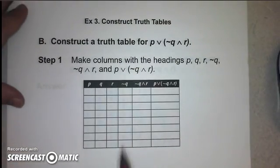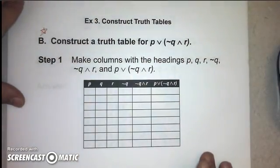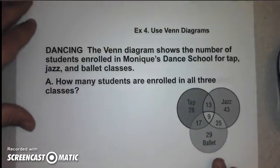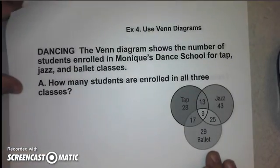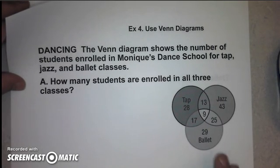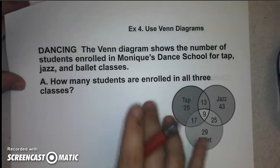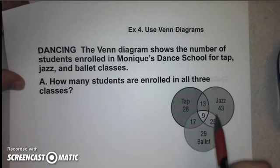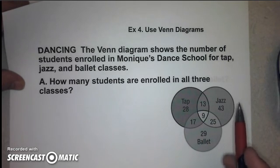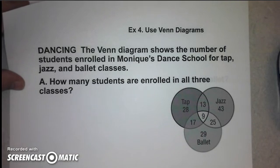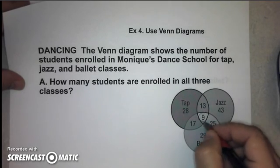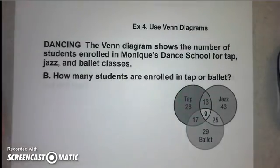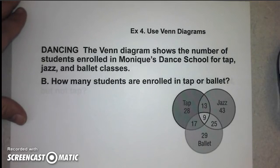Example 3B is more complex — we'll come back to that in class. The last main idea is Venn diagrams, another way of organizing groups of information, which we'll also discuss further in class. For example 4A, we have a Venn diagram showing students enrolled in tap, jazz, and ballet classes. How many students are enrolled in all three classes? That would be the overlapping region of all three circles, which is nine students. This is a longer lesson with a lot of new information, but we should have time to cover the rest in class.